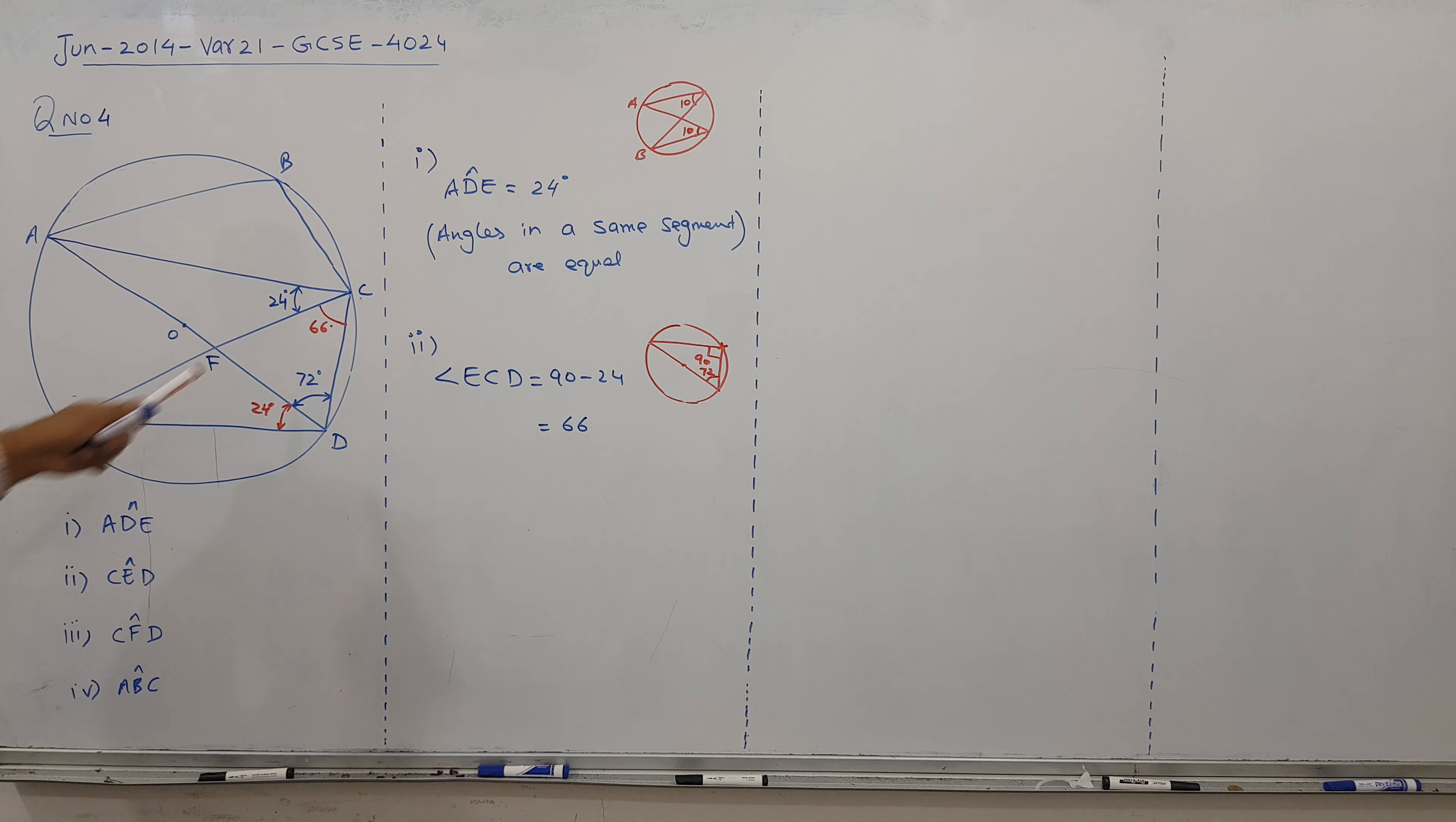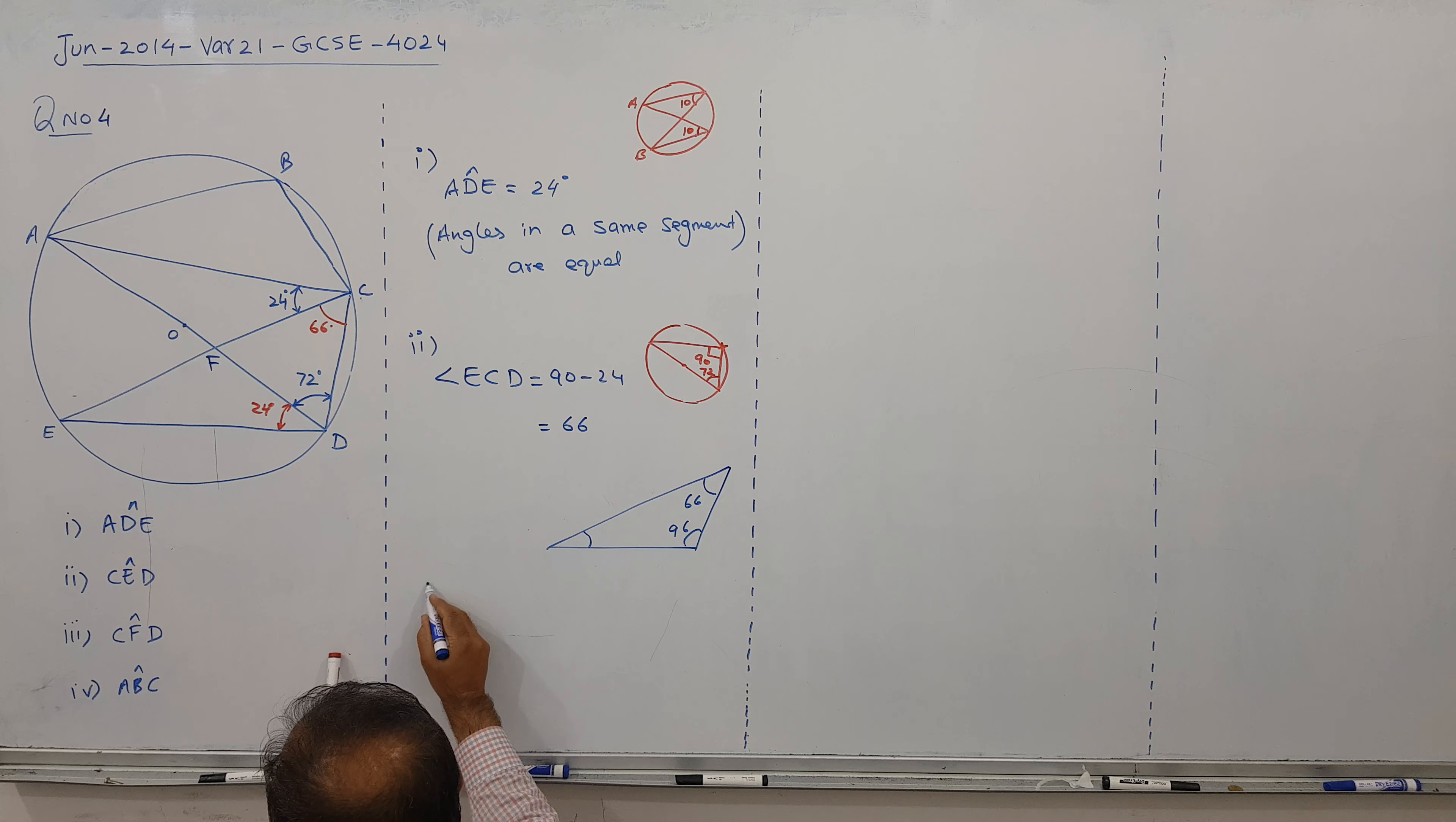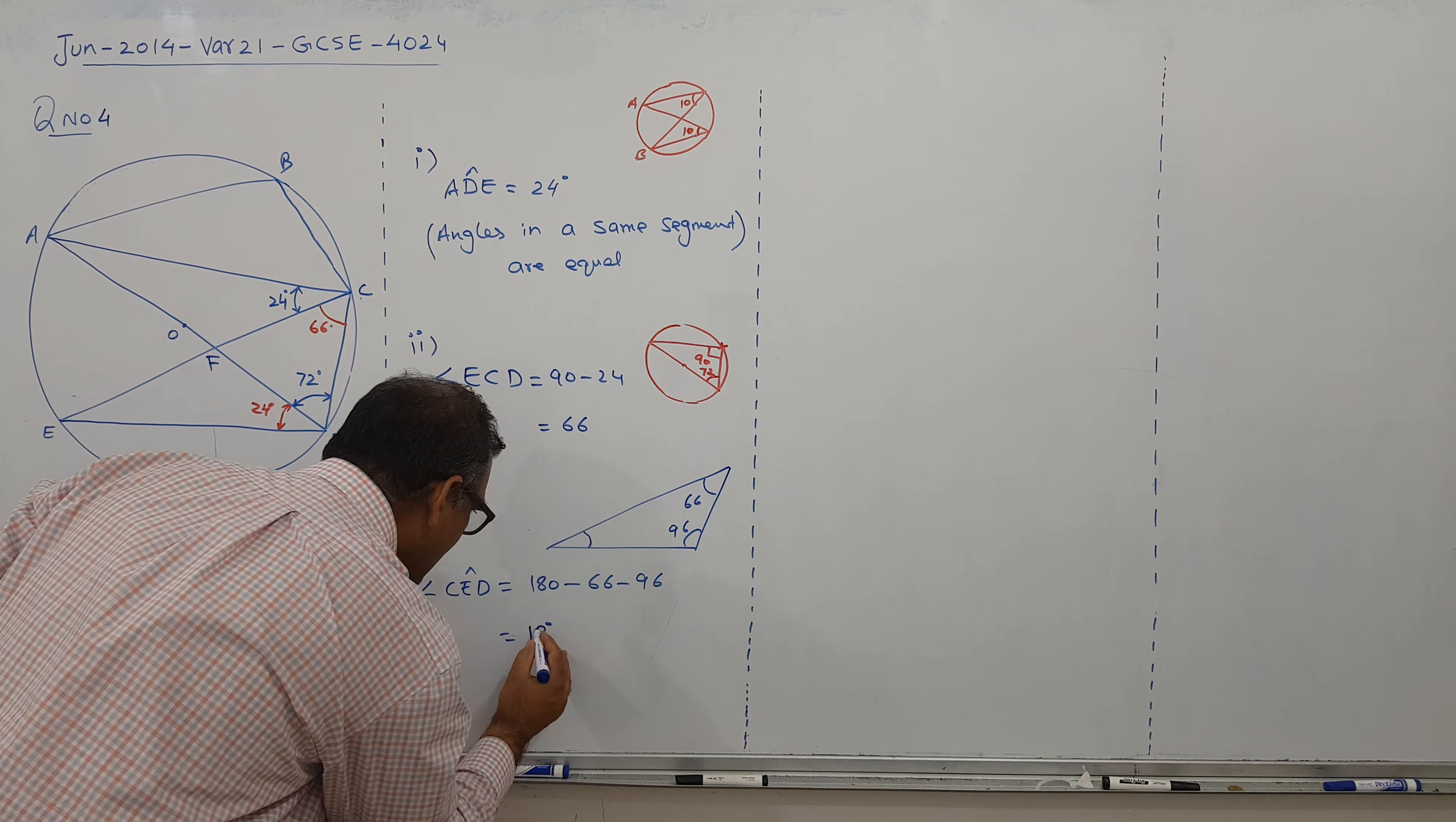Now with 66 degrees, we make this triangle. This is 66, this is 72. Angle CFD equals 180 minus 66 minus 72, which is 18 degrees. We have finished this one.